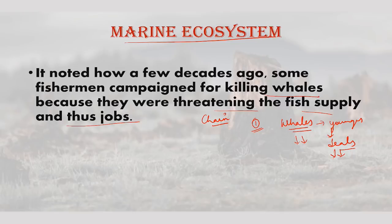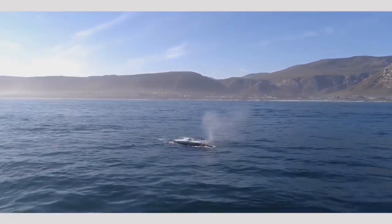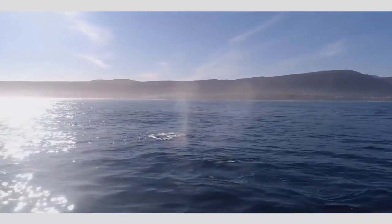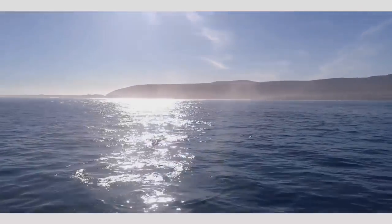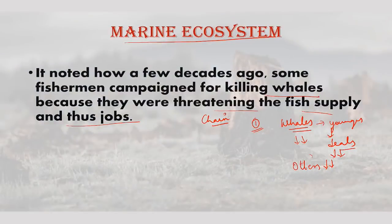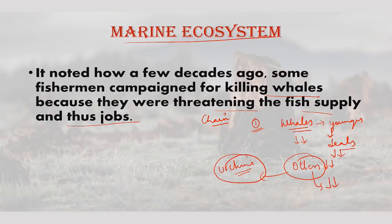Otter numbers also started declining. When otters declined, the population of urchins and other targets of otters flourished — since otters feed upon urchins. As otter numbers fell, urchin populations started increasing. These decimated the kelp forest where many fish larvae grew in relative protection. The exposed fish larvae were easy pickings for a variety of sea life. The fishermen's livelihoods were destroyed.